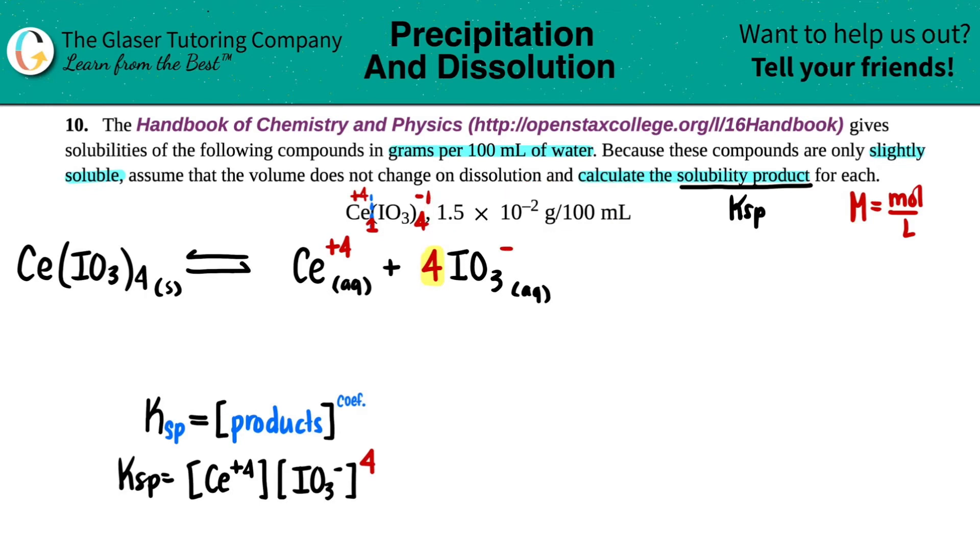So we have 1.5 times 10 to the negative second. And that's grams of the initial compound, the Ce(IO3)4. And this is all over 100 mL.